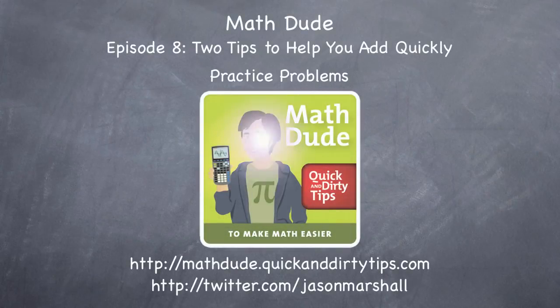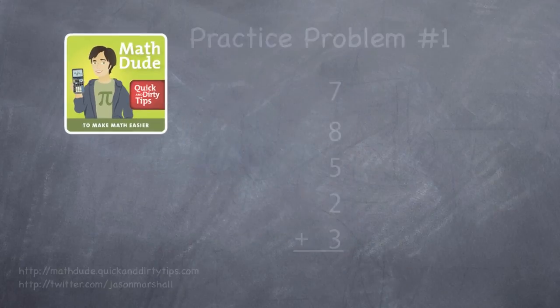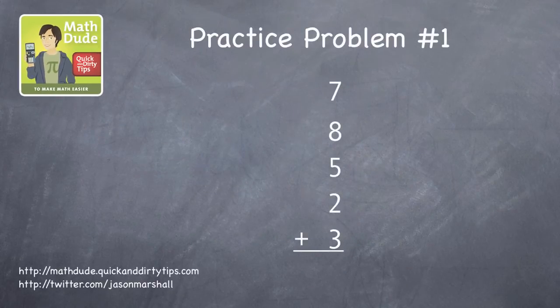Hey math fans, Jason Marshall here with a few tips to help you solve the practice problems in episode 8. So the first problem is just a list of 5 numbers that you're adding together, but the idea is to add them faster.